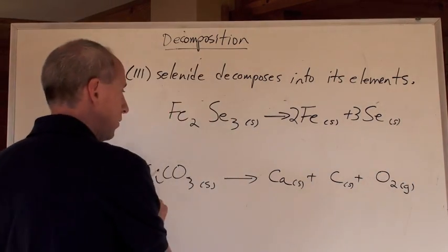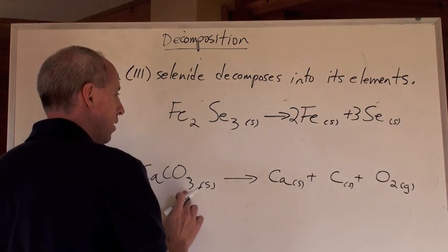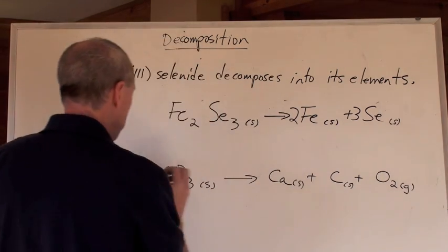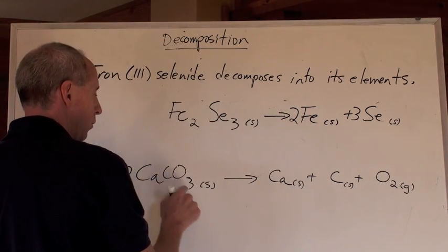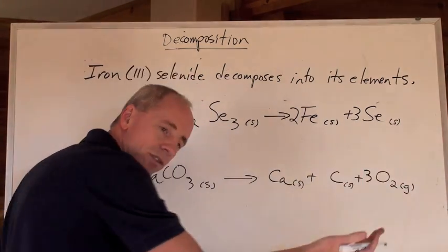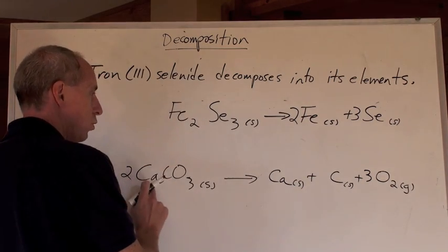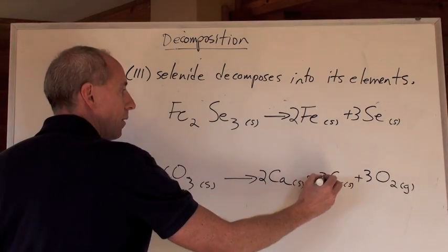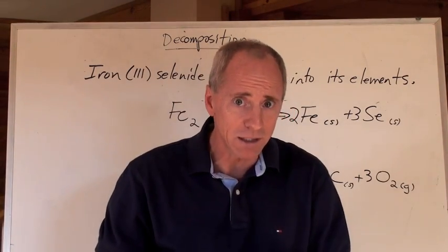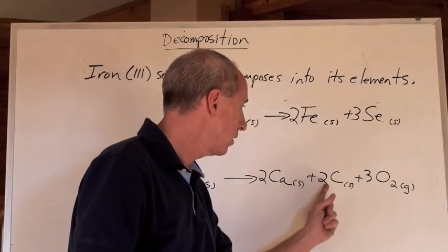Balance? One Ca — one Ca. One C — one C. Three O's on the left, two O's on the right. What are we going to do? Six. If we put a two in front of the compound, we've got two times three — six oxygens. Put a three in front of O₂ — three times two, six oxygens. But wait, we messed with the calciums and the carbons — two calciums now, two carbons now. Balancing isn't hard — just concentrate, look at it, figure it out, put numbers in front. It's all good.